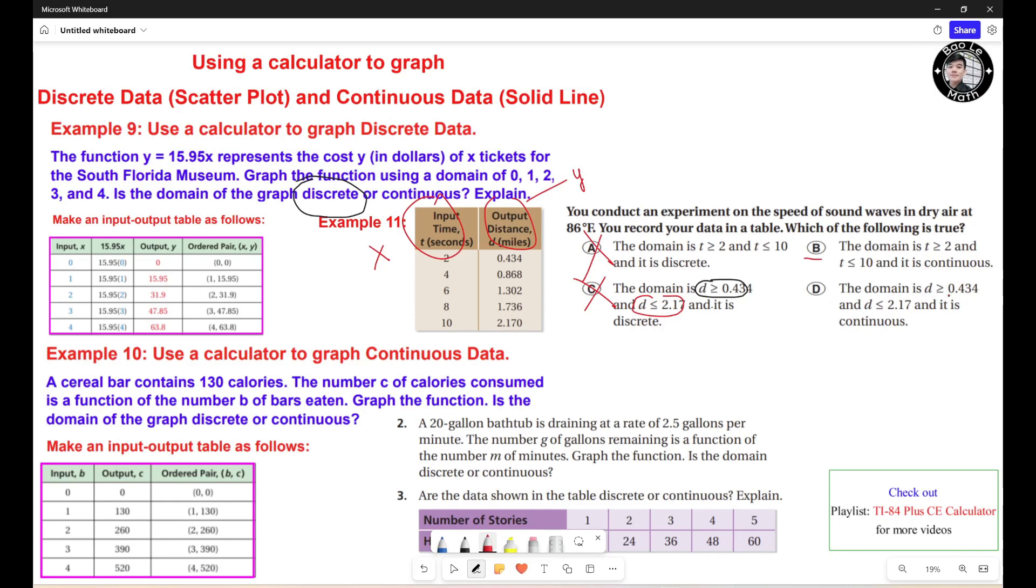This could be right. Now, D: The domain is d greater than... Again, this is not the domain. This is the range. So this is wrong. Only the answer choice B is correct.